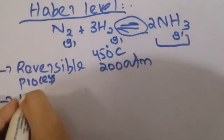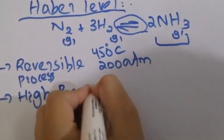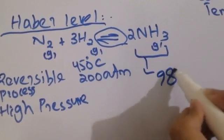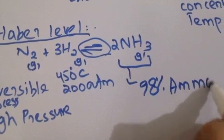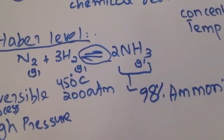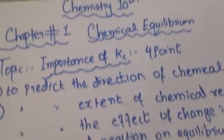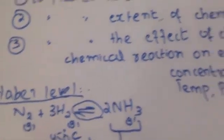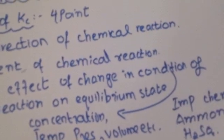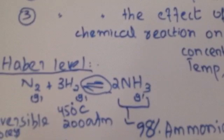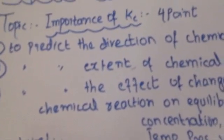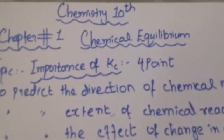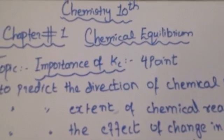The second condition is high pressure. When this mixture reacts under these conditions, 98% ammonia is produced. This is the Haber process — a reversible process carried out at high pressure — resulting in a mixture with 98% ammonia yield. These are the four important points showing why we use Kc.